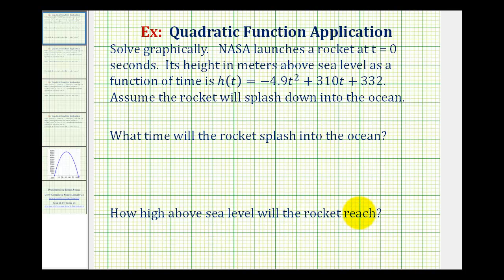There's a couple things we should recognize right away. First, we have a quadratic function which forms a parabola or a U-shape. And since the leading coefficient is negative, the parabola opens down. It would look something like this. Next, the function value when t equals zero is 332. So the rocket starts 332 meters above sea level. We're going to go up, reach a high point, come back down and splash into the ocean.